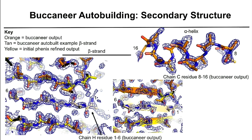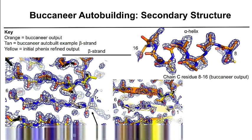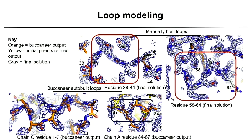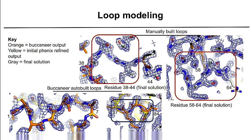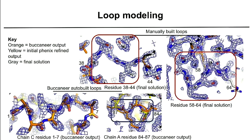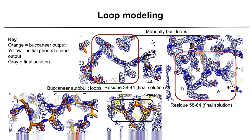Here I outline some features Buccaneer was able to add. In orange is the auto-building output, and in yellow is the initial Phoenix-refined output. It nicely placed a tan beta strand whose carboxy termini align with the nitrogen termini of strands above and below to form hydrogen bonds. Buccaneer also added a helix at the end of fragment C. For loop modeling, Buccaneer built a loop connecting to that helix and a small four-residue loop connecting a small helix to a strand. Only minimal manual loop modeling was needed to reach the final structure, including a loop with a tyrosine motif connecting a strand to a helix.